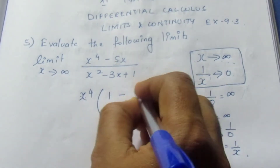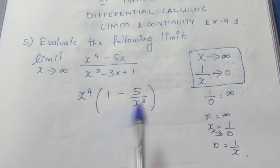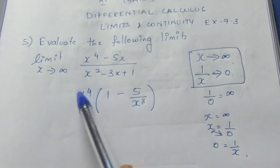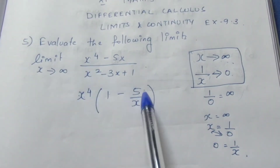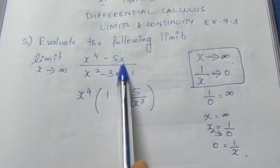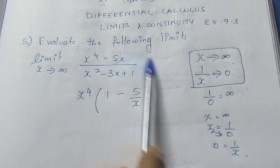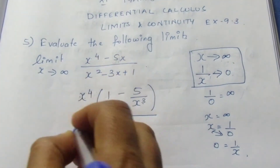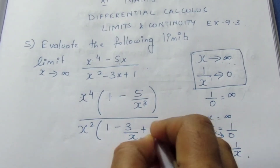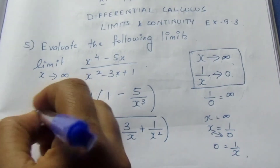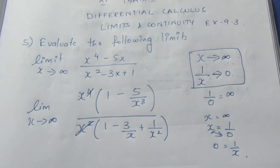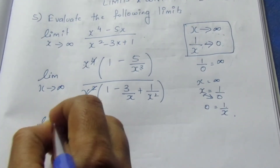We have x cubed. I'm going to multiply by x squared. We will divide by x squared — putting it by x squared. If we put it by x squared, one x will cancel. We will put it by x squared.